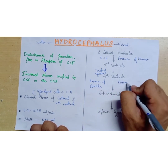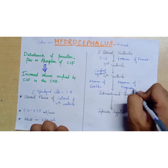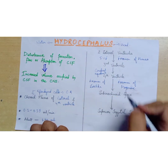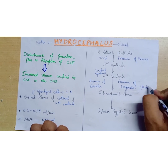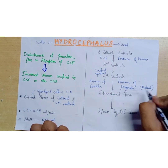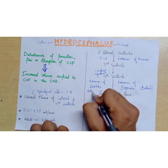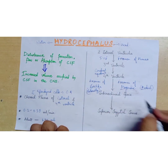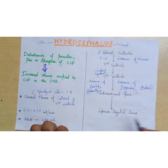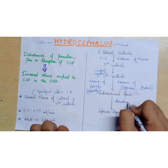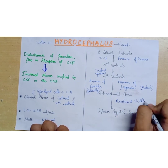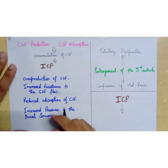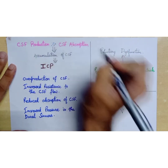Then the CSF moves to the subarachnoid space through the foramen of Magendie and foramen of Luschka. To memorize their locations: Magendie is located medially and Luschka is located laterally. After entering the subarachnoid space, the CSF is drained into the superior sagittal sinus via the arachnoid villi.